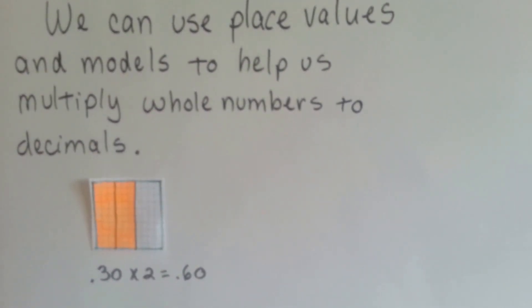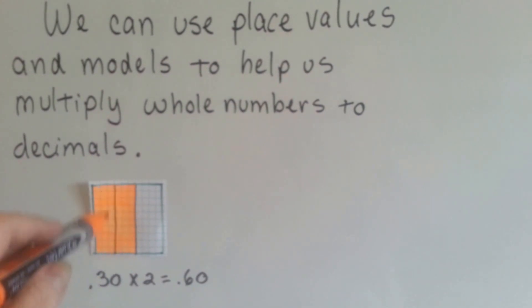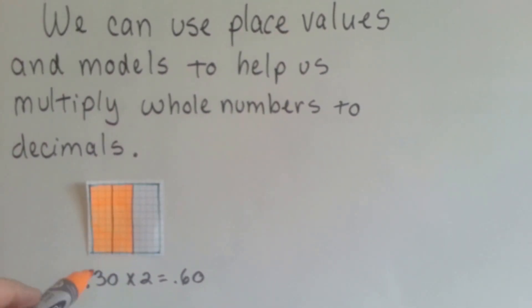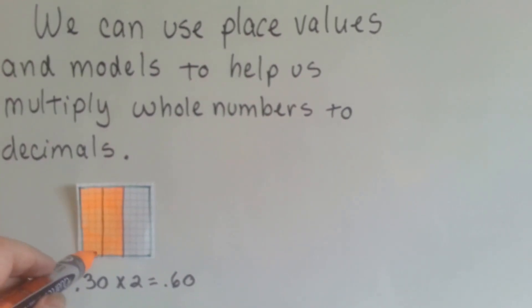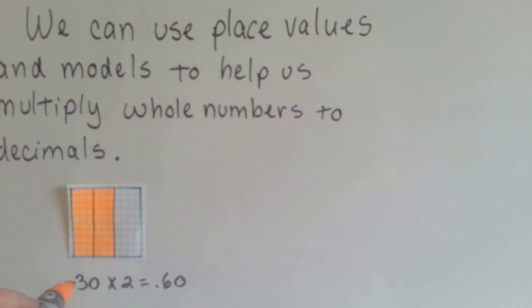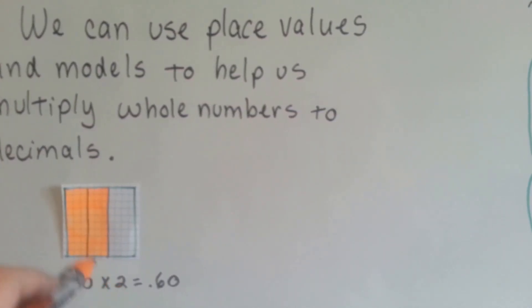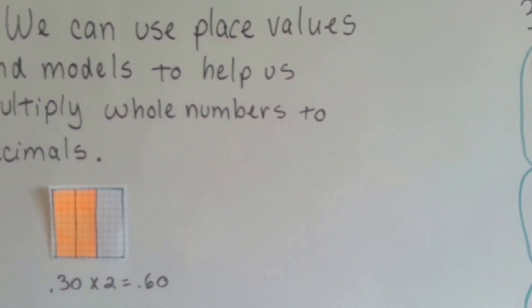Using a model, we can use a square of 100 to represent a whole, 1, and then we can fill in 30 boxes to represent 30 hundredths, and then another 30 boxes to represent another 30 hundredths to do 30 hundredths times 2. 60 boxes would be filled in, which would be 60 hundredths, see?